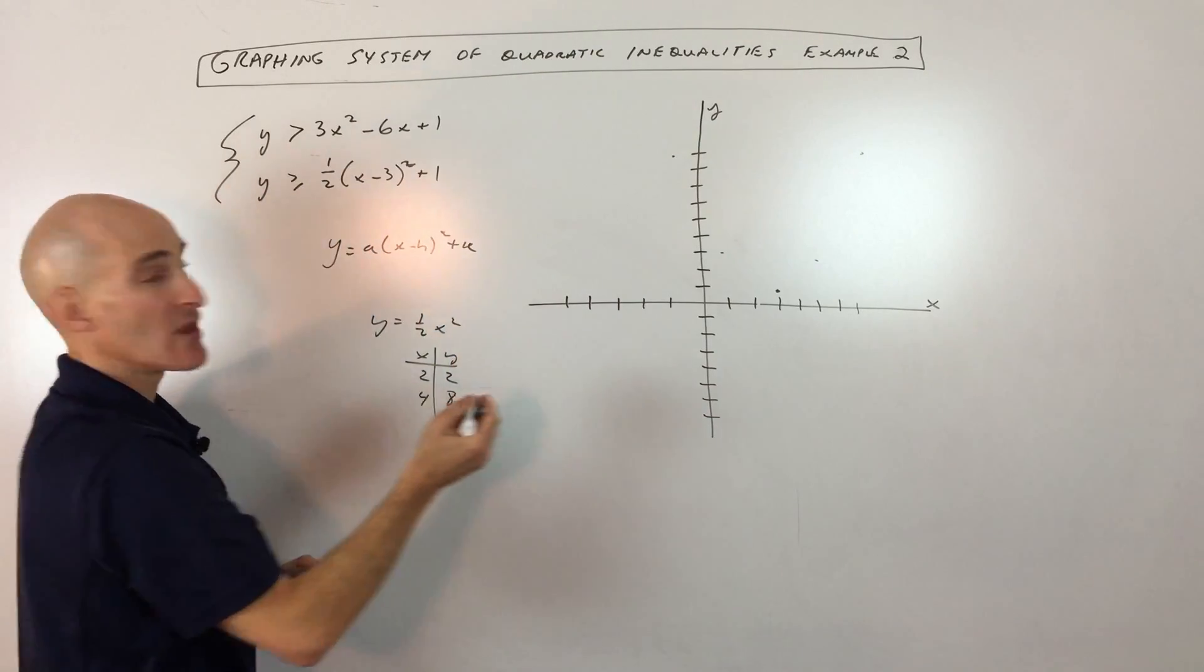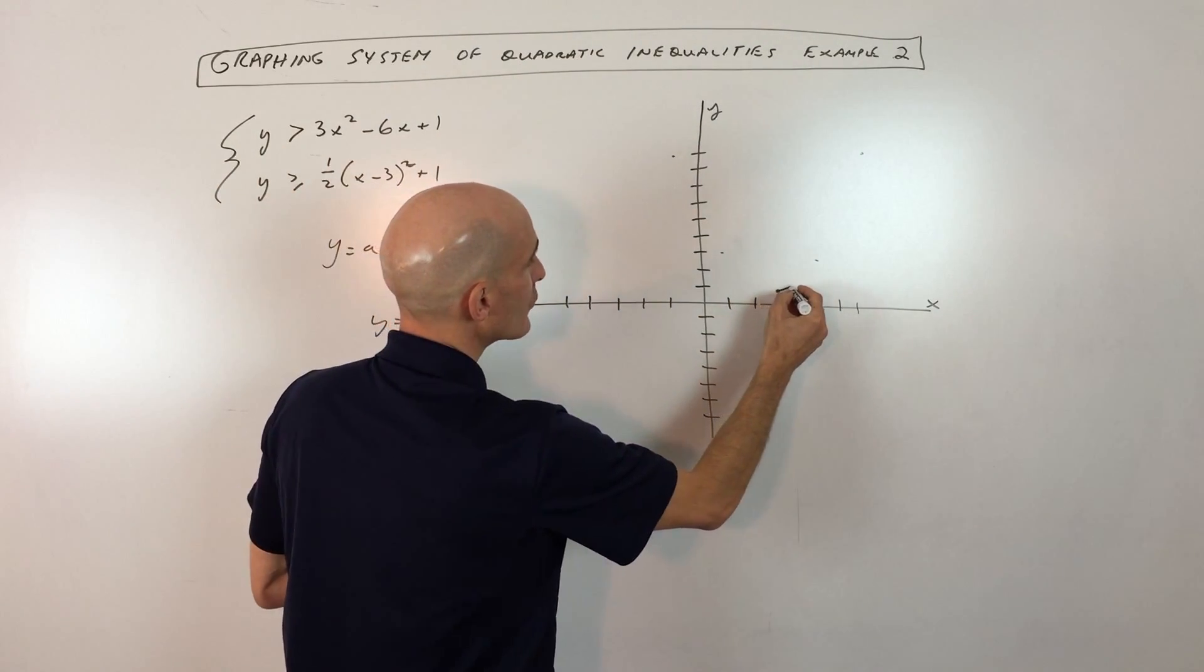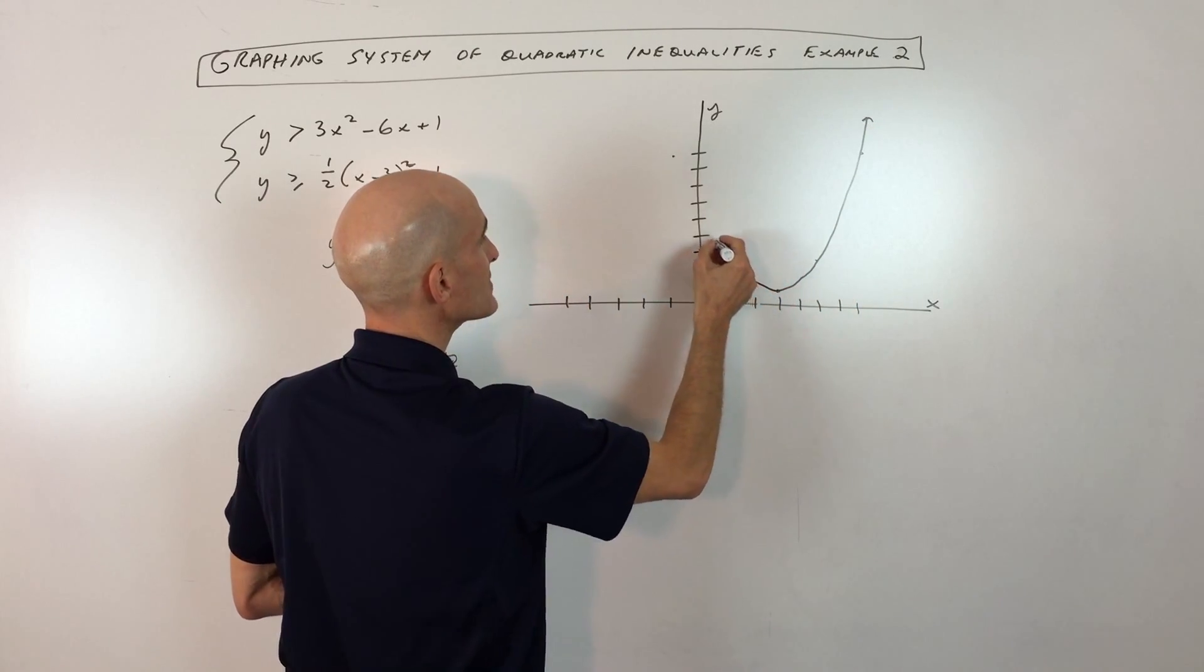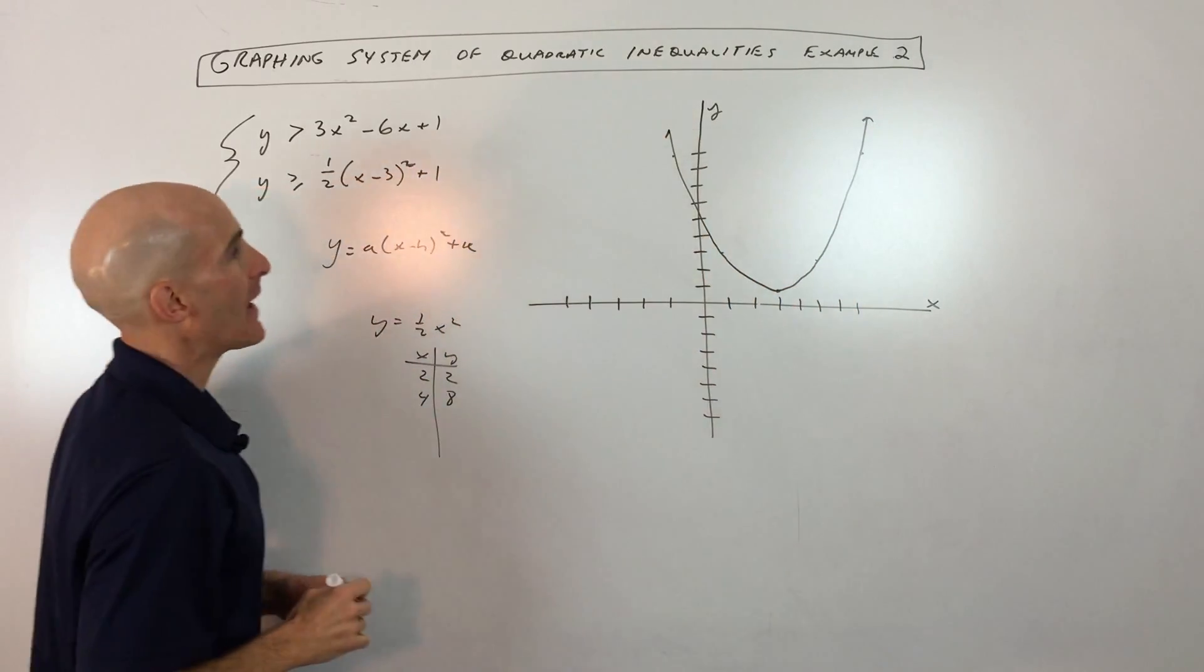Now notice how this is greater than or equal to. That means it's going to include the points on the graph. So this is a solid line. It's not dashed. It includes the points on this, approximately like that.